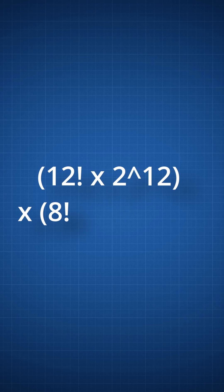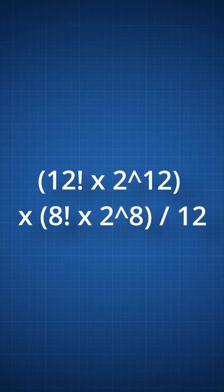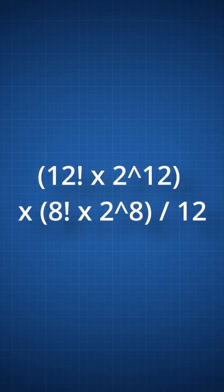There are a couple impossible positions on the Rubik's Cube, so you have to divide that number by 12 to compensate for that. At the end, you get 12 factorial times 2 to the power of 12 times 8 factorial times 2 to the power of 8 divided by 12.